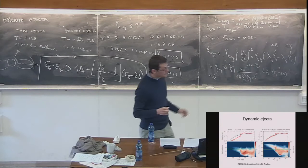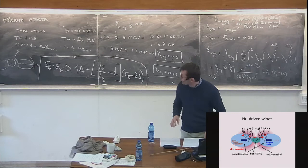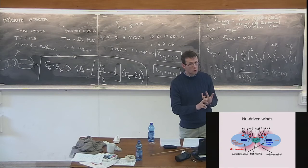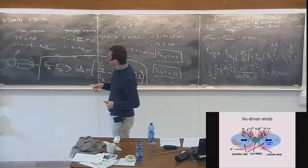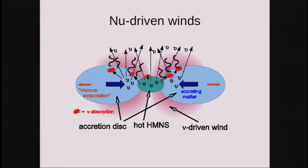To summarize the dynamic ejecta: I've told you the temperature, entropy, and electron fraction — which remains an open issue but shows a broad range dependent on polar angle. Regarding mass: the amount of dynamic ejecta depends on the system, but it is of order 10^{-4} to 10^{-3} solar masses — roughly one thousandth of a solar mass.